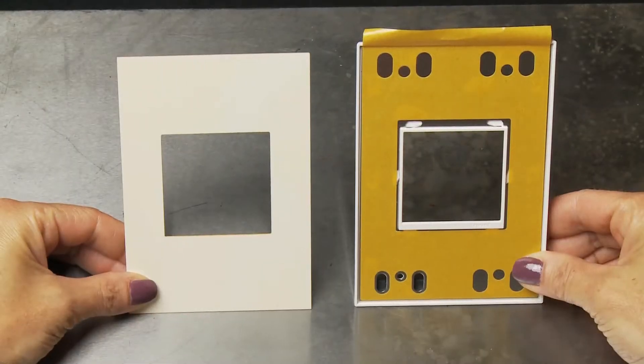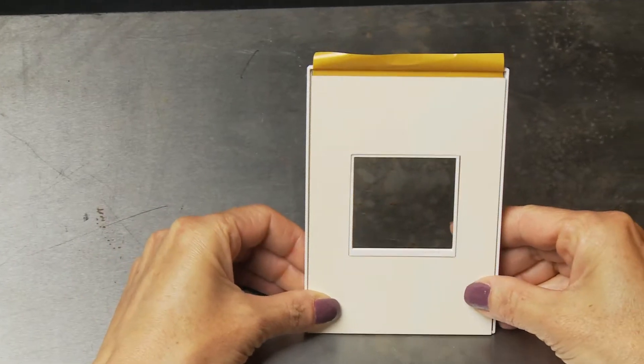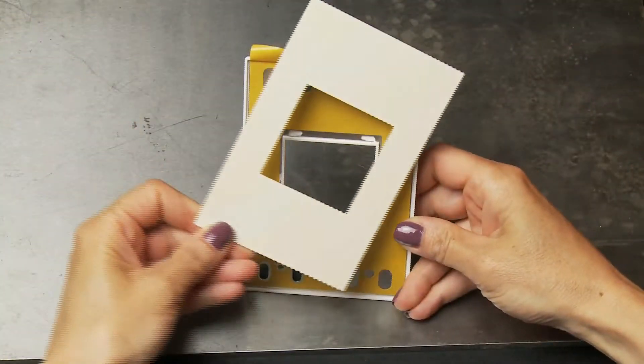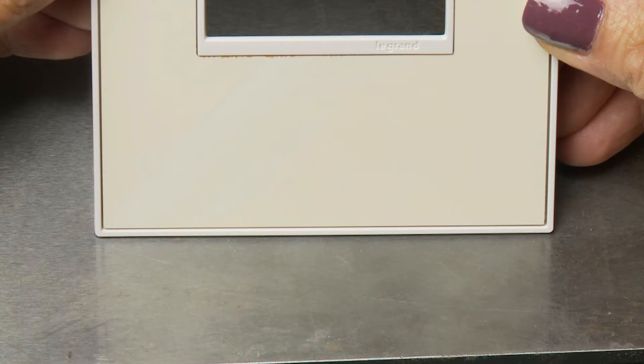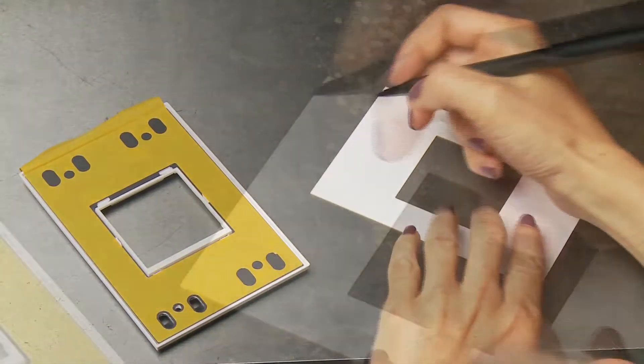To start, determine which end is the top of the Adorn template by fitting it with the Adorn wall plate. The template only fits correctly one way. Once you fit the template properly, remove the template and label the top end on the back of the template.